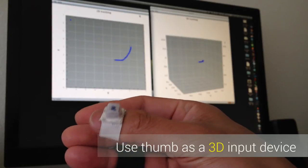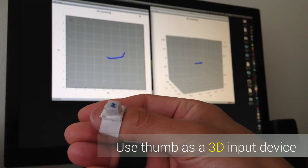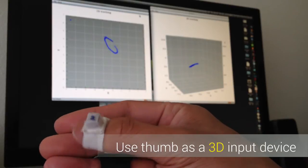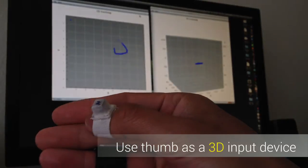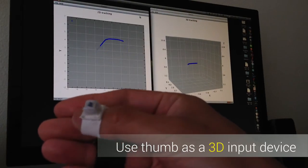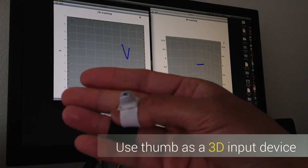The goal of U-Track is to create a continuous 3D input device for pointing. Because our approach requires minimum instrumentation, it enables ubiquitous 3D pointing in a variety of contexts.